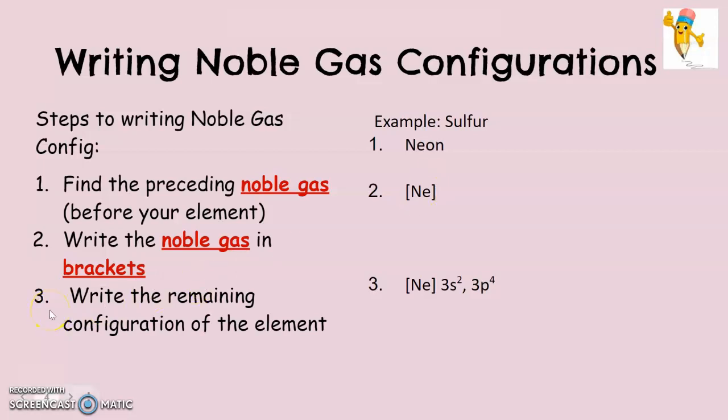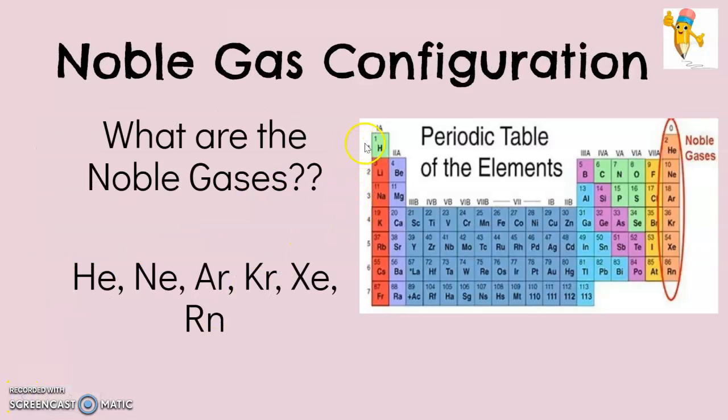And then step three is just to write the remaining configuration. Because we don't want neon, we want sulfur. So if we go back, basically instead of starting at hydrogen, we're starting at neon. And we're going to finish the configuration.